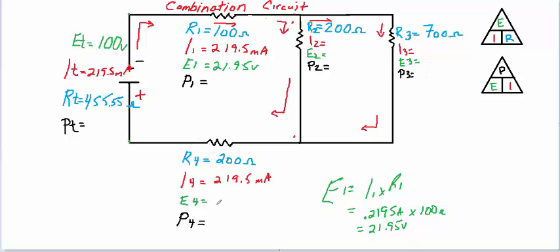And we can do the same thing with E4, where E4 equals I4 times R4. And my E4 is the same, 0.2195 amps. And my resistance has doubled, so it's 200 ohms now. So doing that, you should have come to 43.9 volts. Let's write that down here. 43.9 volts.